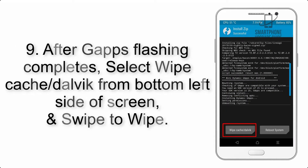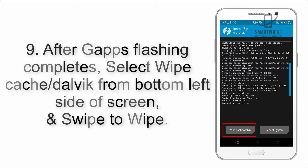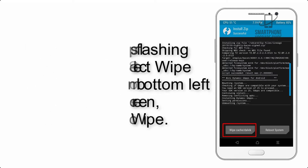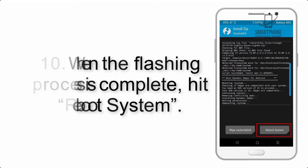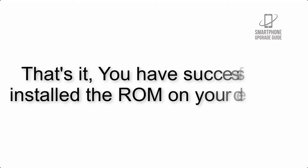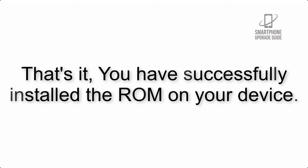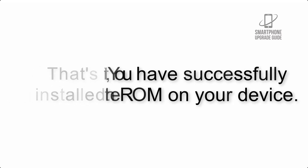Step 9: After GApps flashing completes, select Wipe Cache and Dalvik from the bottom left side of the screen and swipe to wipe. Step 10: When the flashing process is complete, hit Reboot System. That's it — you have successfully installed the ROM on your device.